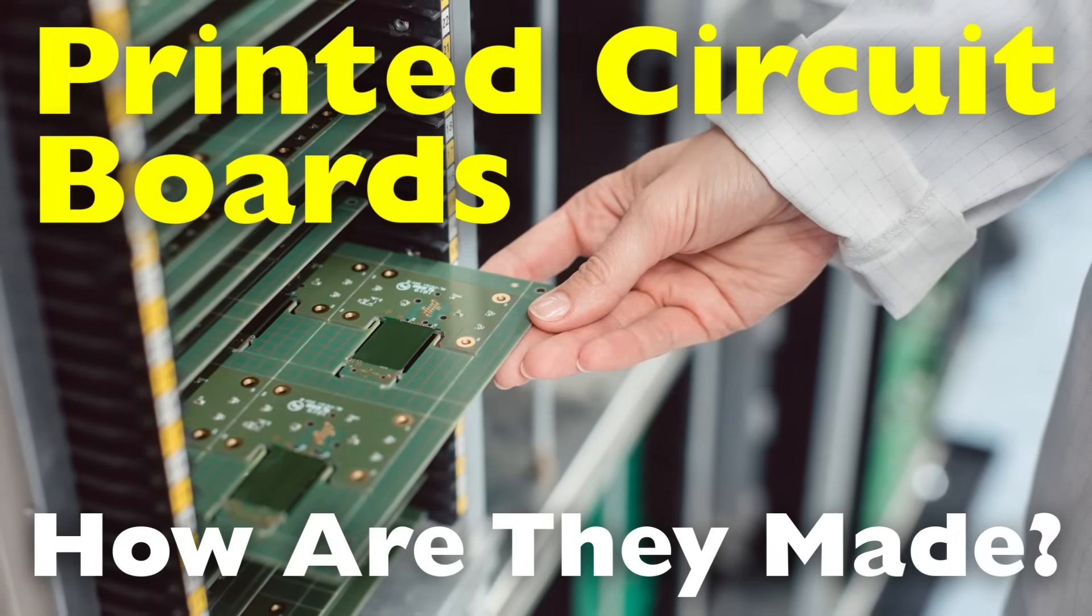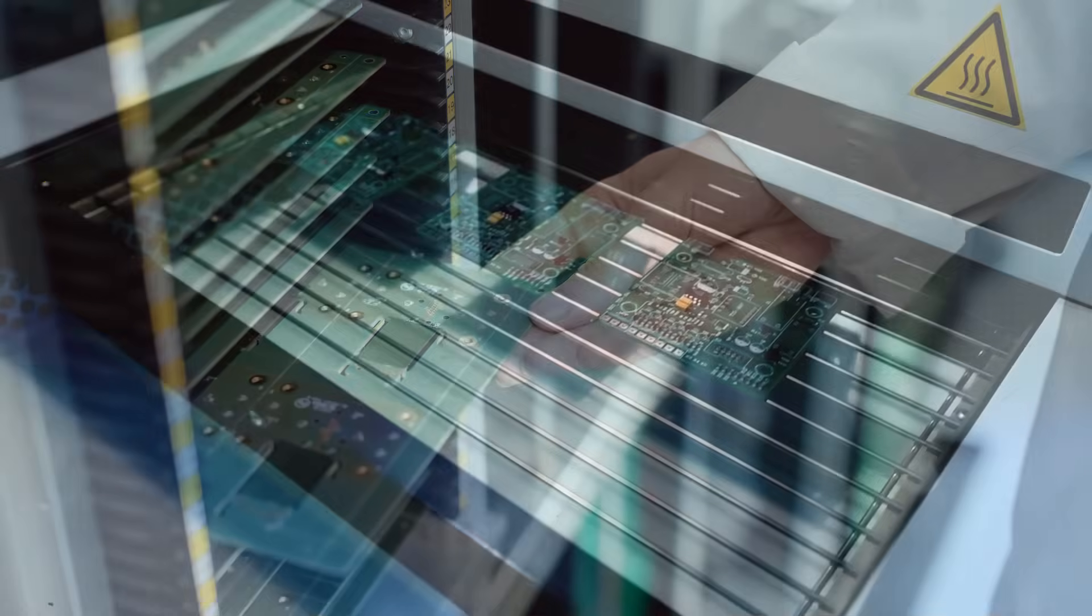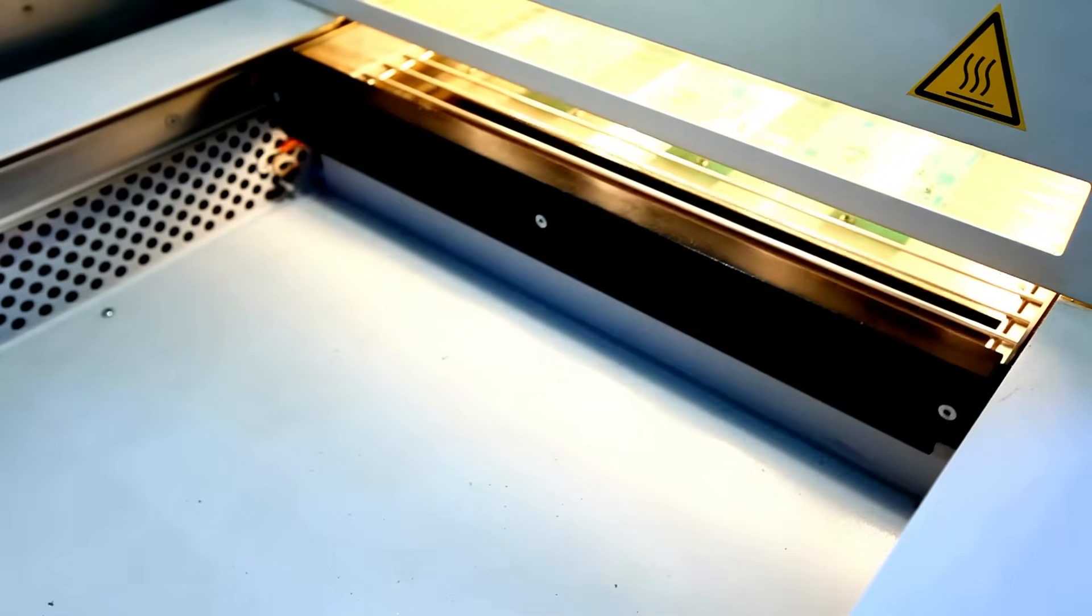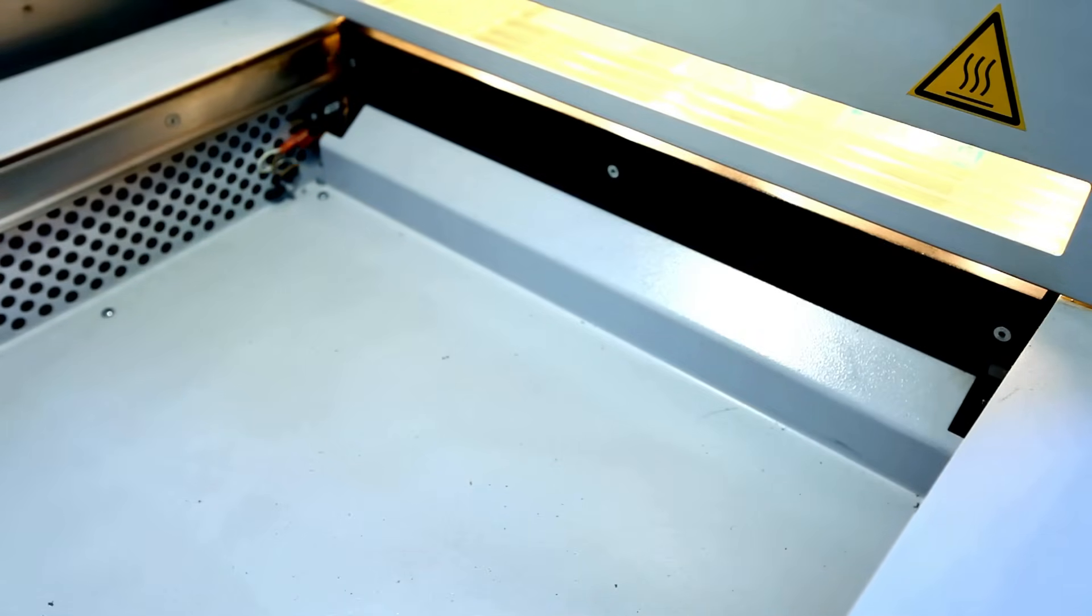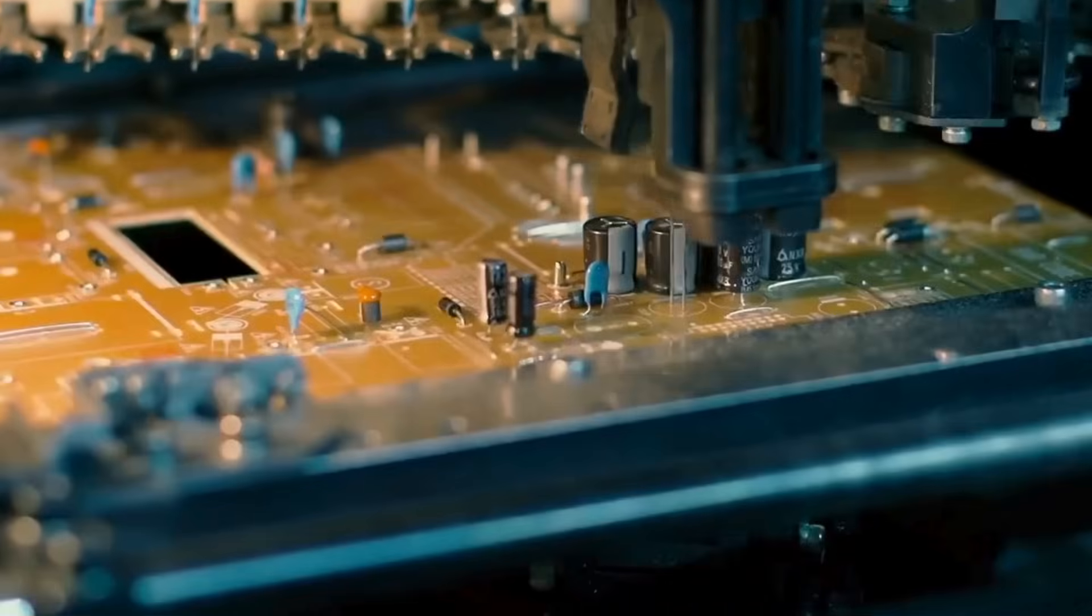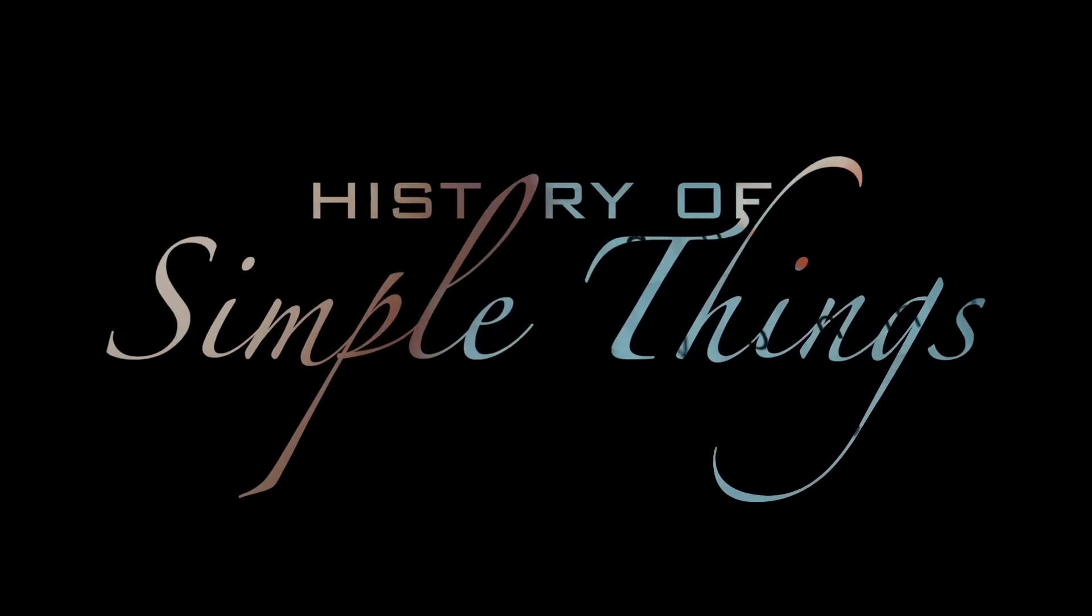But have you ever wondered how these intricate, precise boards are actually made? Today, we're diving deep into the fascinating process of how a printed circuit board comes to life, from a digital design to a fully assembled, electrically functional board ready to power your favorite devices, right here on History of Simple Things.